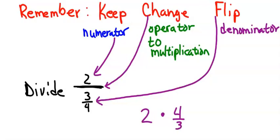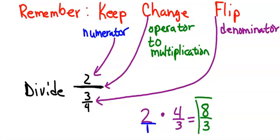All right, so easy — keep, change, flip. Now remember, 2 is the same as 2 over 1 because it's a whole number. So our answer is 2 times 4, which is 8, over 1 times 3, which is 3. So 8 over 3 is our answer here.